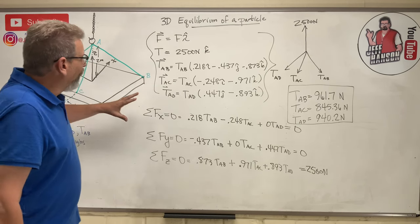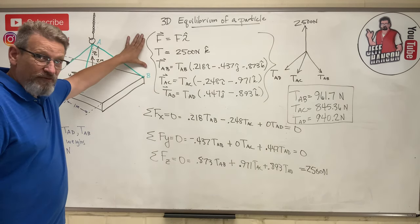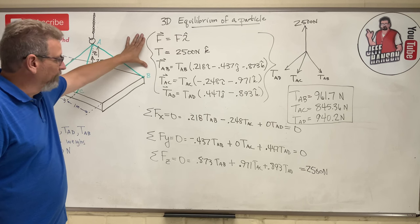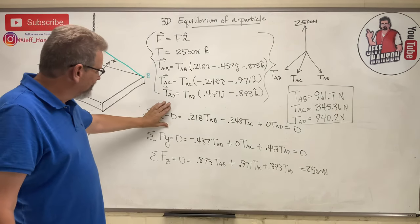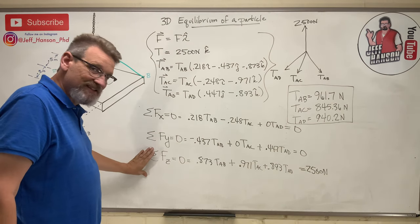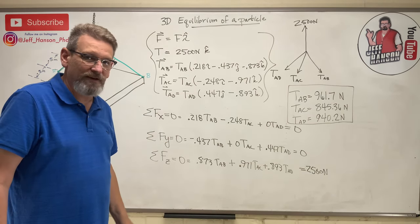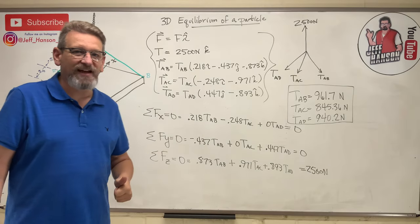So the steps are: first, write your vectors in I, J, K form. Then write your equations of equilibrium and put all the i's in the X, the j's in the Y, and the k's in the Z. Solve it, you got your answer. All right, I'll see you back here next time, gang.